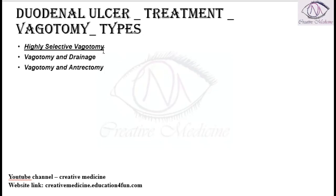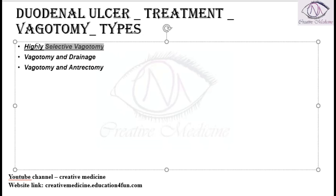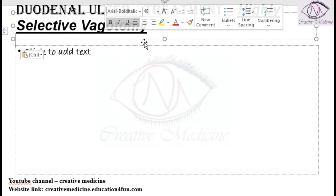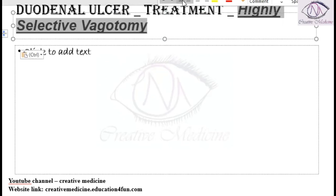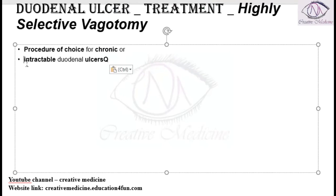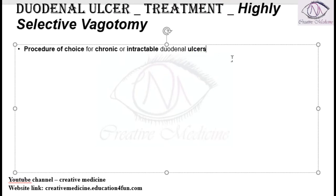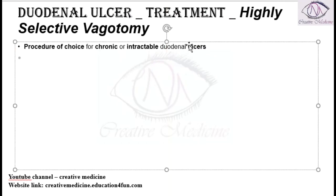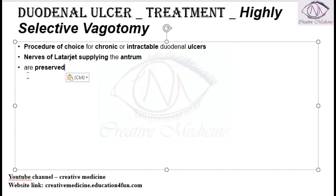In highly selective vagotomy, this is actually a procedure of choice which is done for chronic and intractable duodenal ulcers. In highly selective vagotomy, the nerve of Latarjet, which supplies the antrum, is preserved.